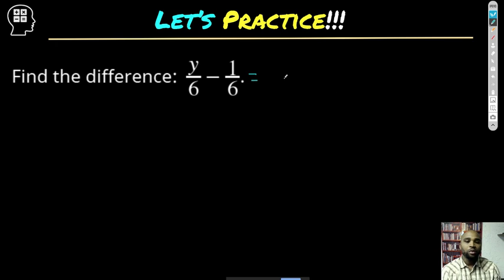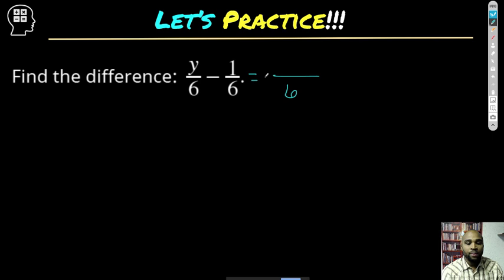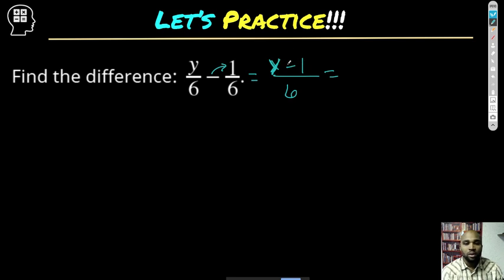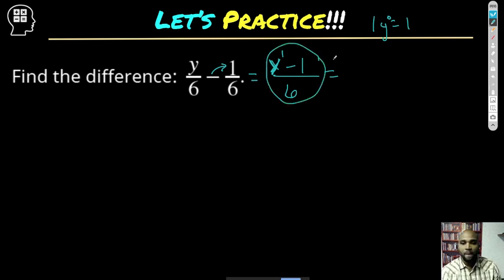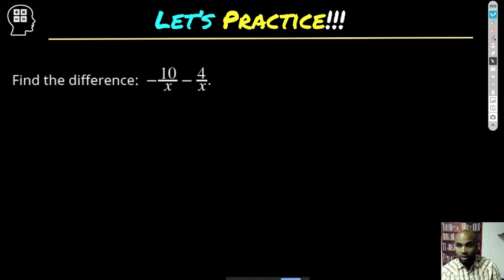I encourage you to pause and work these out yourself first. Now, my denominator is a like denominator, so I keep that the same. I subtract y — this negative gets attached to the 1 — so it's y minus 1. Can I combine y and 1? No, because they're two different terms: we're dealing with a variable with one exponent and a constant. Anything to the zero power is one, so that's just one. They don't share the same variable, so we leave it just like that.